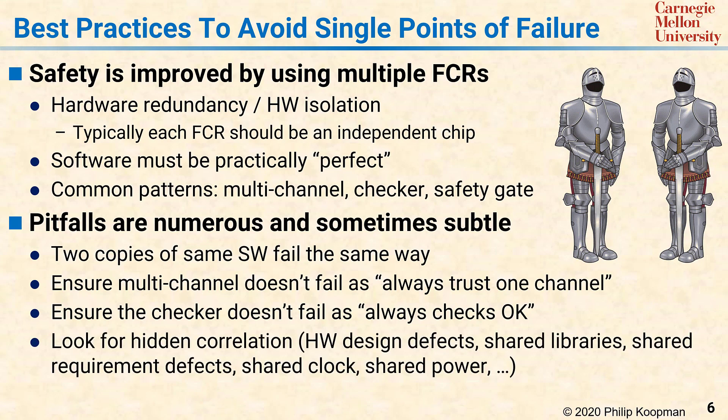Often, the most difficult part of getting safety-critical designs right is looking for hidden causes of correlated failures. This could include hardware design defects on multiple chips, shared software libraries, defects in requirements used to design hopefully diverse components, a shared faulty time source, a shared faulty power supply, and the list goes on.